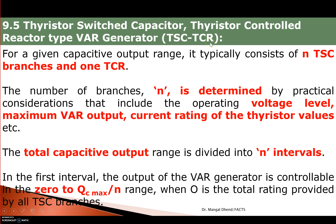The TCR will go on absorbing power even generated by TSC, and you can get smooth variable control if TCR combination is used. N, the number of TSC branches, is determined by the voltage level and maximum VAR output required. If maximum VAR output is 40 and one TSC is 10, then N equals 4. If one TSC gives 20, then N equals 2 for 40 KVAR. The current rating of the thyristor valves is important, and N can be decided accordingly.